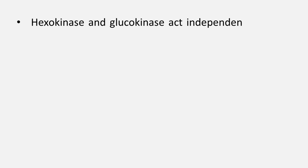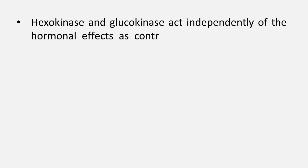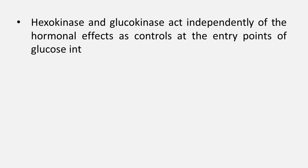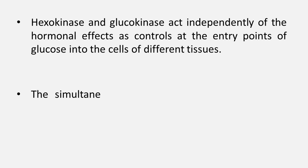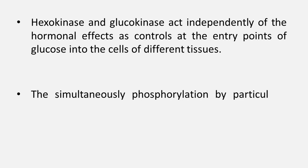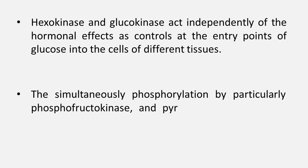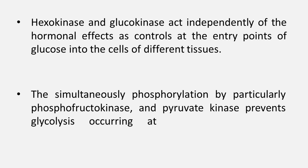Two main interpretations of glycolysis pathways are: hexokinase and glucokinase act independently of the hormonal effect as control at the entry point of glucose into the cell of different tissues; and the simultaneous phosphorylation by phosphofructokinase and pyruvate kinase prevents glycolysis occurring at the same time as gluconeogenesis and glycogenolysis.